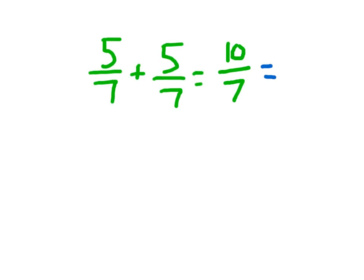Seven goes into ten one whole time with a remainder of three. If we could divide that three, we would divide that three into seven parts. And I wrote out that number sentence just to help you remember and help you see that remainder three.